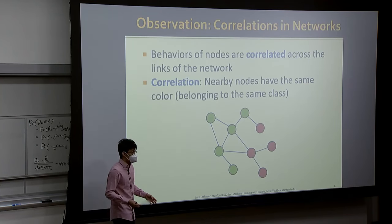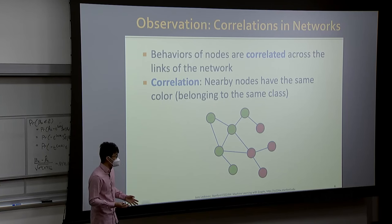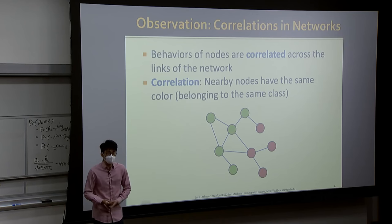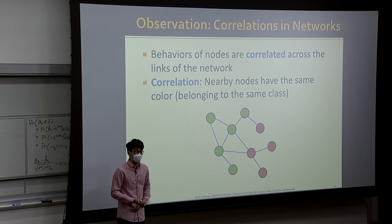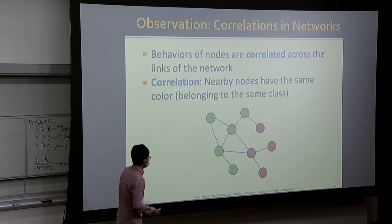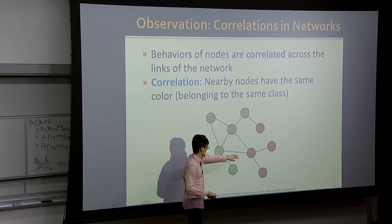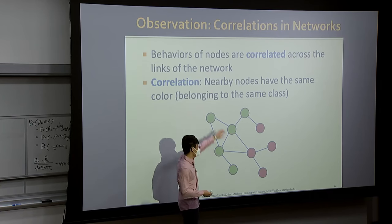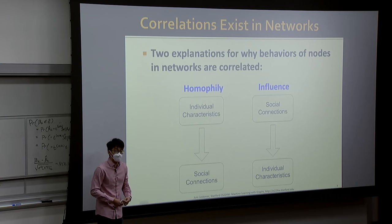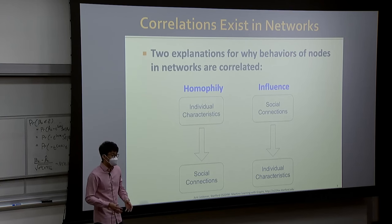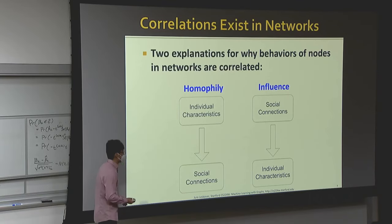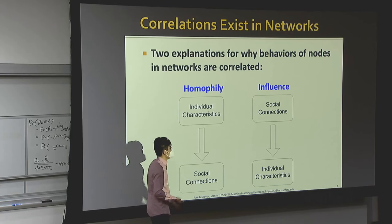Let's start with the motivation for assigning similar labels to connected nodes. This is based on the observation that correlation widely exists in networks — behaviors of nodes are correlated across the links of the network. Nodes sharing the same label tend to cluster together, forming green and red clusters. There are two key phenomena explaining why this holds: homophily and influence.